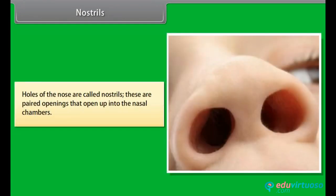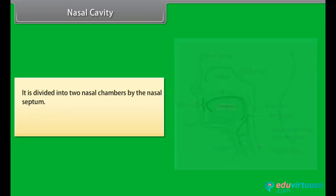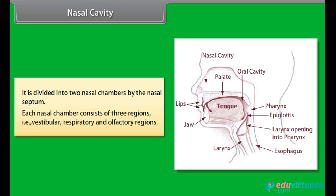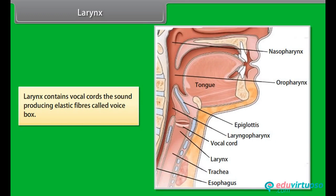Nostrils: Holes of the nose are called nostrils. These are paired openings that open up into the nasal chambers. Nasal cavity: It is divided into two nasal chambers by the nasal septum. Each nasal chamber consists of three regions — vestibular, respiratory and olfactory regions. Larynx: The larynx contains vocal cords — sound-producing elastic fibers — and is called the voice box.